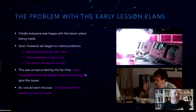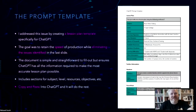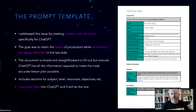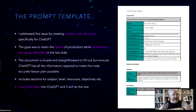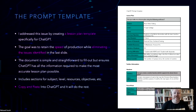We very soon realized this was not an issue with ChatGPT itself — it was an issue with the prompts. Our solution is fairly straightforward: using a classic Microsoft Word document, we made a prompt template. This ensures all the information you require for your lesson goes into the system, and you get a much more accurate, engaging, and hopefully more useful lesson plan out the other side. The goal was to retain the speed of using ChatGPT while also eliminating those earlier issues. The document includes sections for things like subject, level, resources, and objectives.